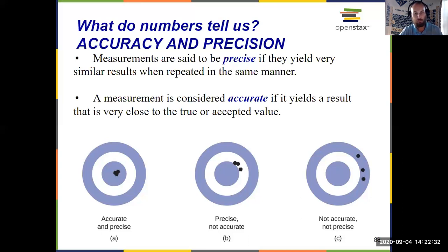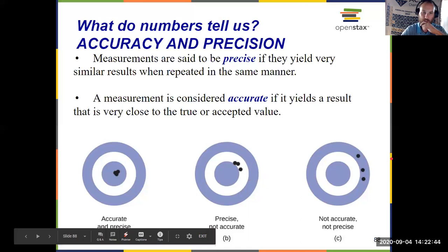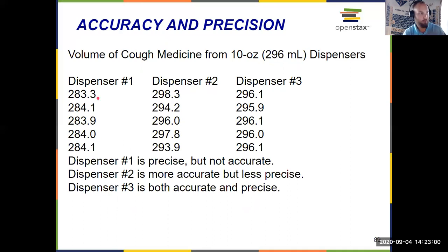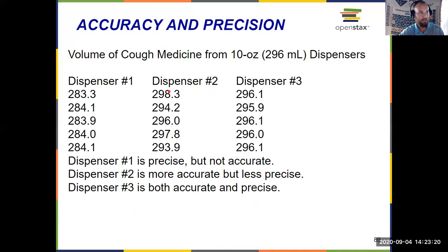In science, you want things to be both accurate and precise. Looking at a data example where the true value is 296: dispenser one is precise because the values cluster around 284, but they're not close to 296 so it's not accurate. Dispenser two is more accurate — closer to 296 — but the values are spread out, so it's less precise. Dispenser three is both precise and accurate: values are close together and right at the true value of 296.